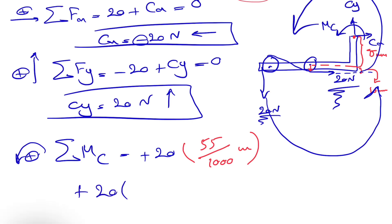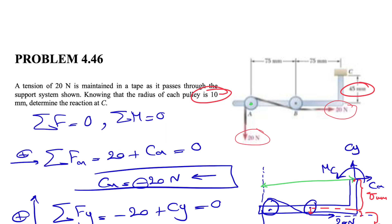The distance that we are looking for, again, this will be the line of action of the force. So this is the line of action of the force, and the distance that we are looking for, I'm going to show it in green now, would be this distance from here to here. If we get back to the figure, we know that from the center of the pulley to point C, we have 75 plus 75.